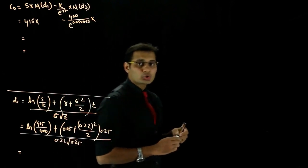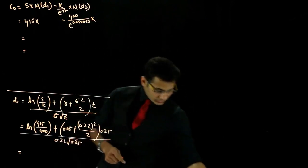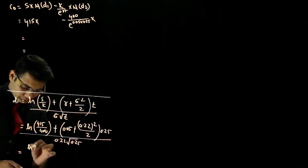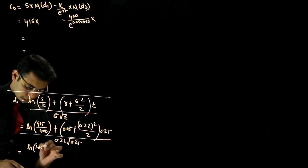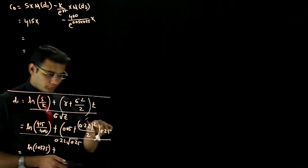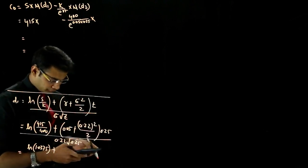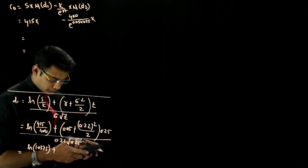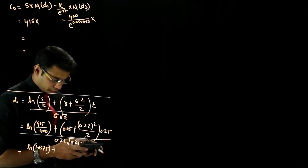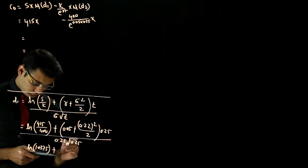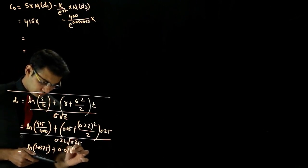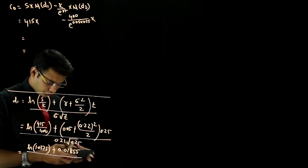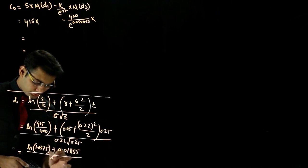Natural log of 1.0375 निकालना है। Calculator method: 2.7183, फिर 12 बार square root, minus 1, M+; फिर 1.0375 रखो, 12 बार square root, minus 1, divide by MRC, equal — answer आएगा 0.03681. तो d1 = (0.03681 + 0.01855) / 0.11.